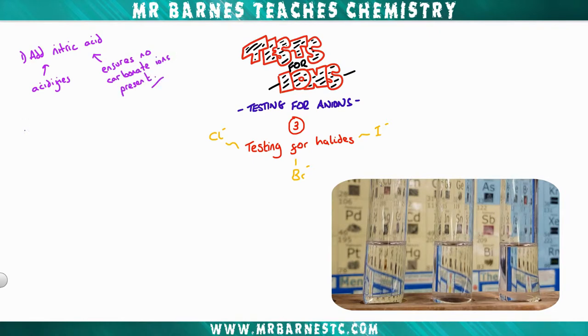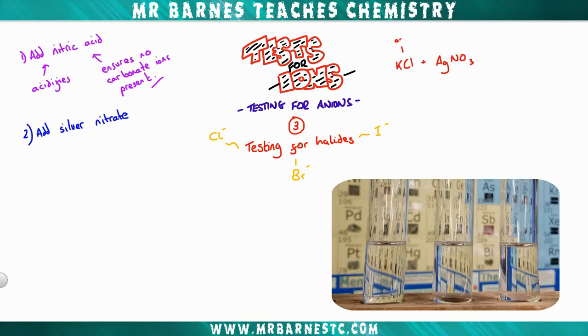The second thing we do is add silver nitrate. Now what happens here is, whatever your halide, if you add silver nitrate to it, it will make silver chloride, silver bromide, or silver iodide.